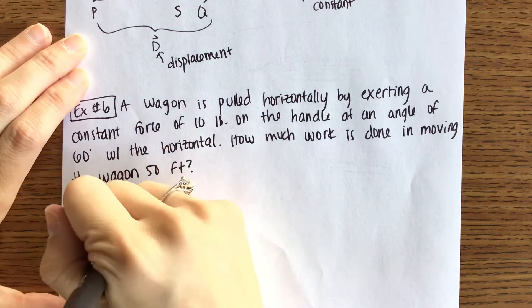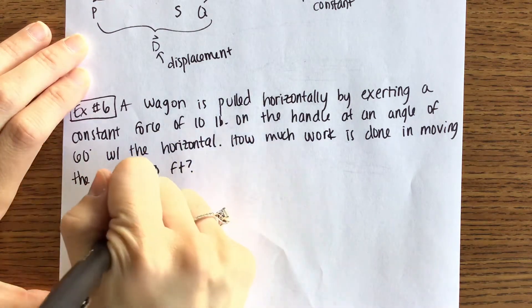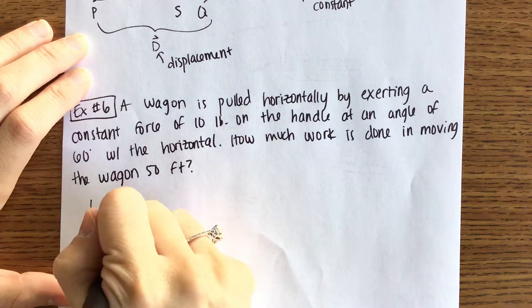The wagon is being pulled on a handle. That's the force. At an angle of 60 degrees with the horizontal.